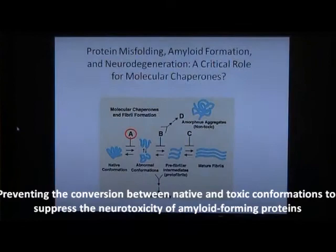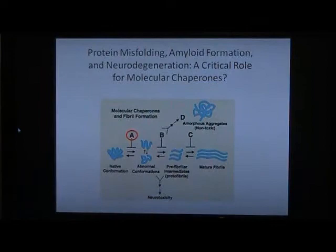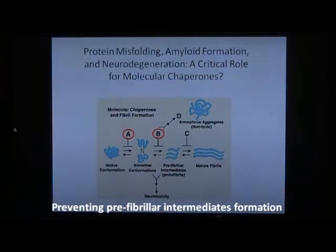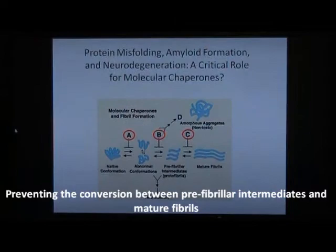A shows molecular chaperones suppressing the neurotoxicity of amyloid-forming proteins by preventing their conversion between native and toxic conformations. B shows molecular chaperones preventing prefibrillar intermediates formation. C shows molecular chaperones preventing the conversion between prefibrillar intermediates and mature fibrils.